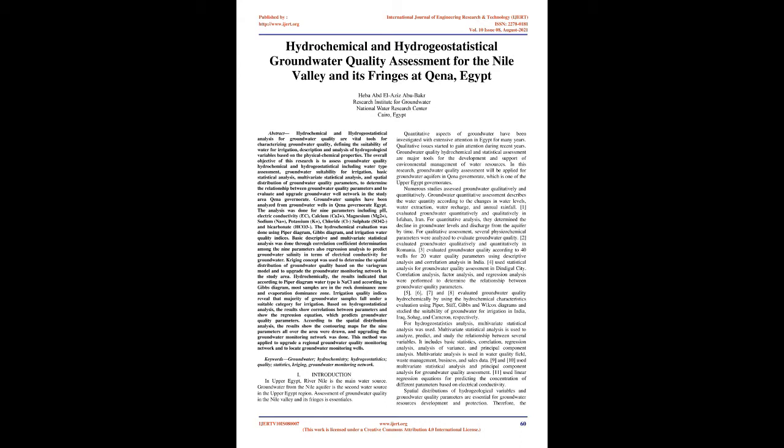Hydrochemically, the results indicated that according to the Piper diagram the water type is NaCl, and according to the Gibbs diagram most samples are in the rock dominance zone and evaporation dominance zone. Irrigation quality indices reveal that the majority of groundwater samples fall under a suitable category for irrigation. Based on hydrogeostatistical analysis, the results show correlations between parameters and the regression equation which predicts groundwater quality parameters. According to the spatial distribution analysis, contouring maps for the nine parameters were drawn, and upgrading the groundwater monitoring network was completed.